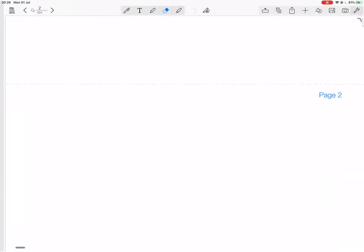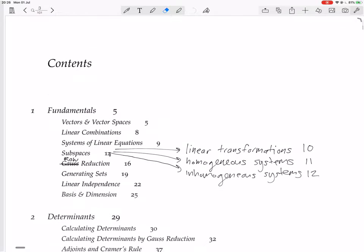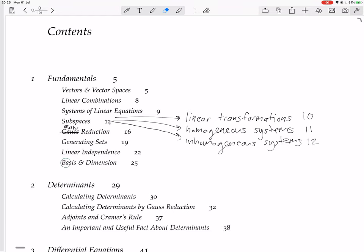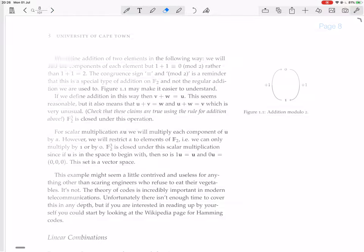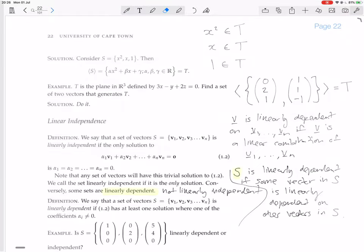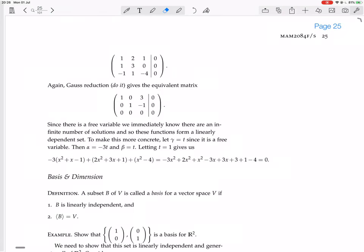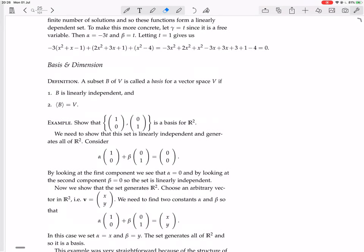Okay, so now we are looking at basis and dimension. We have a definition: A subset B of V is called a basis for a vector space if it is linearly independent and the span of B equals the whole vector space.